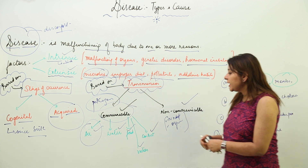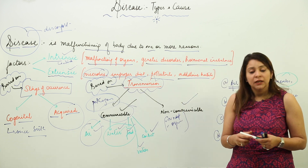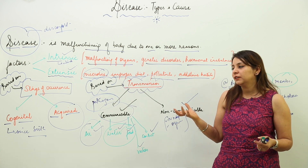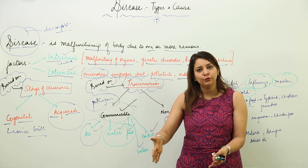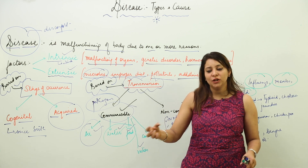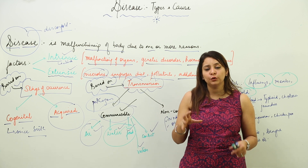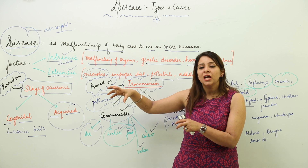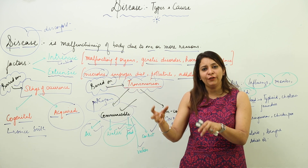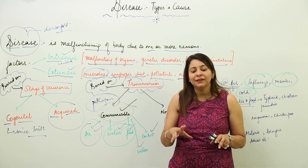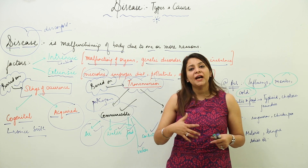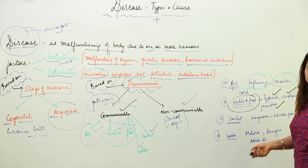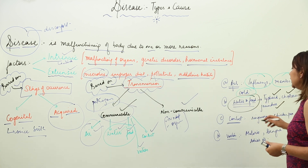Diseases can also spread through contaminated food and water. For example, if food is left uncovered, flies — which may have been sitting on excreta — carry microorganisms and transfer infection to the food. When you eat that contaminated food or water, it can cause diseases like typhoid, cholera, and jaundice.